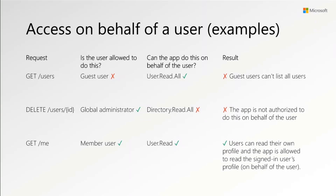To walk through an example using Microsoft Graph: in the first case, we're trying to list users with a GET /users request. The first question is always whether the user is allowed to do this. For a guest user, the answer is no — guest users by default are not allowed to list all users — so we answer no immediately. Microsoft Graph would stop there and not even ask the second question. It turns out the app is allowed to take this action on behalf of the user, but that's irrelevant because the user themselves can't do it. The result is an authorization failure.